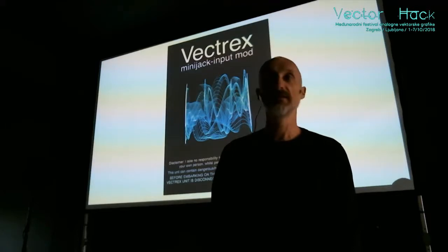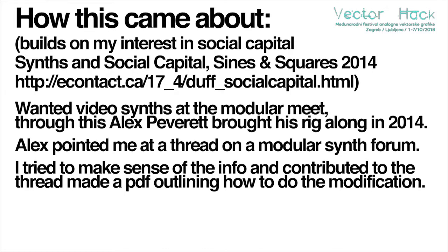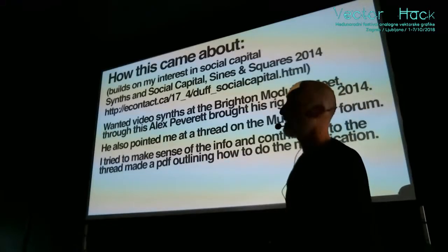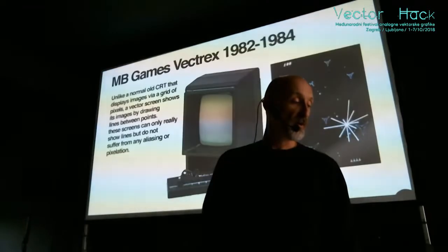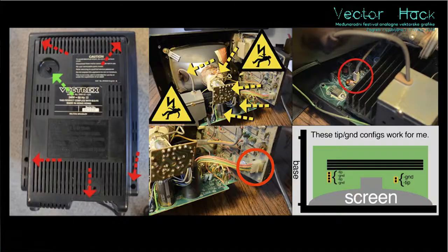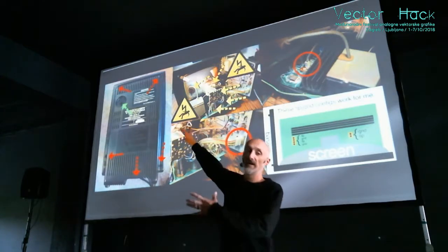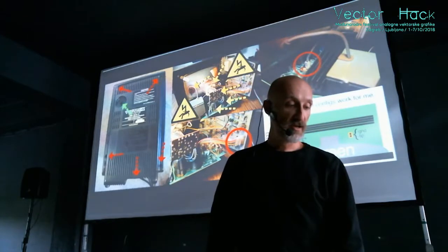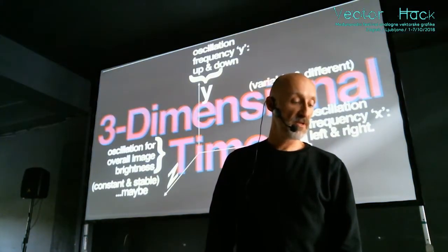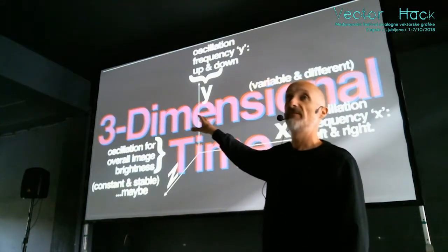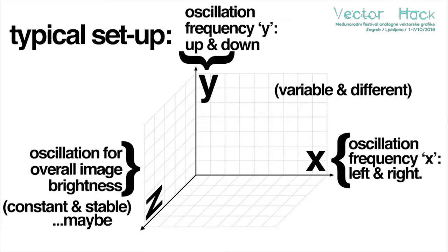I've enjoyed being invited to things like this because of that. Alex is the chap who suggested I look at this particular forum about that modification. Here are some images from the modification guide. Before I came downstairs, Derek Holzer was upstairs just trying to fix another one of these - good to see it's getting used. There are warning signs about parts of a CRT - cathode ray tube - not to touch because you might die. What the modification allows me to do is play with time in three dimensions.